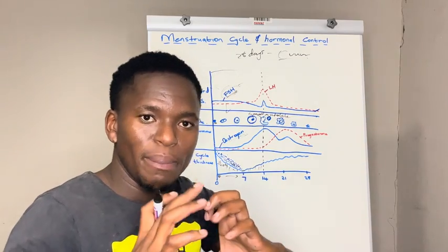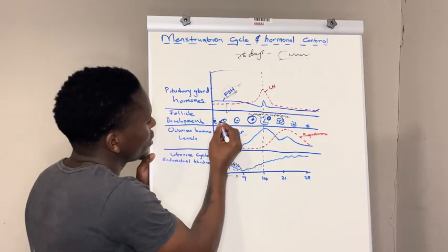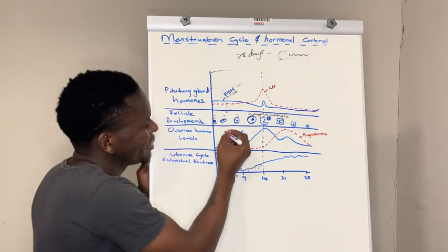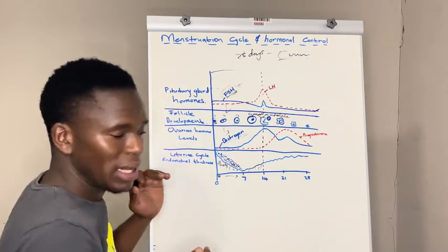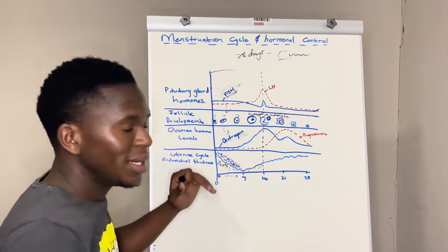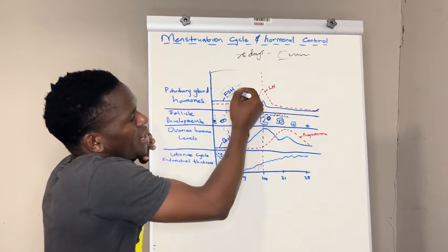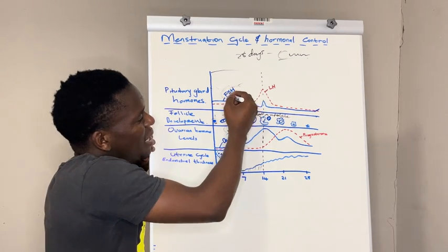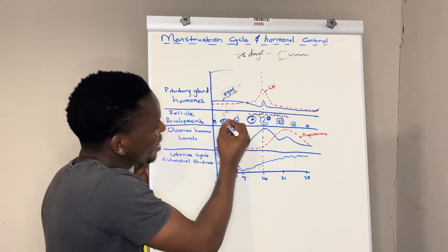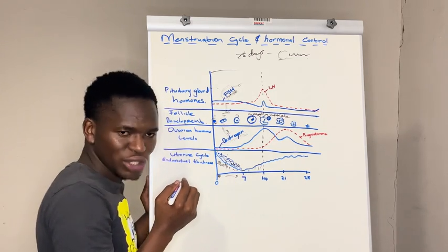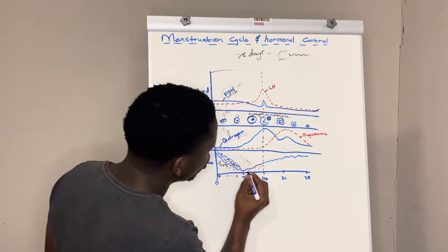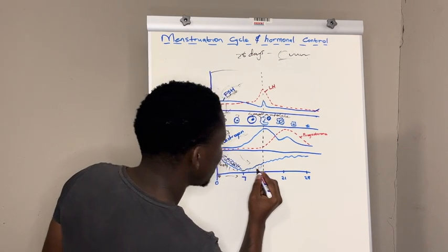Follicle stimulating hormone will stimulate the development of primary follicles. You can see follicle number one, two, three here. These primary follicles will secrete the hormone estrogen. So from day zero to day seven the endometrial lining is breaking, the pituitary gland secretes FSH, FSH stimulates primary follicles, and these follicles secrete estrogen. The estrogen will then thicken the endometrial lining again.